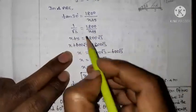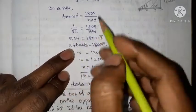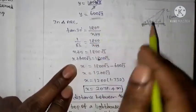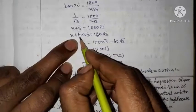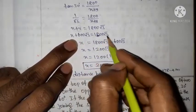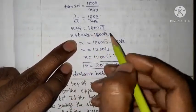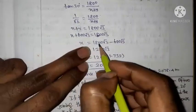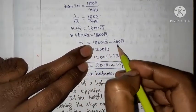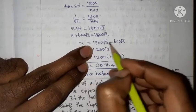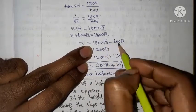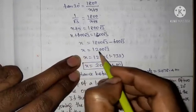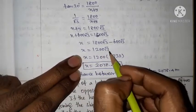Substituting y equals 600 root 3 into x plus y equals 1800 root 3: moving 600 root 3 to the right side gives x equals 1800 root 3 minus 600 root 3. So x equals 1200 root 3.